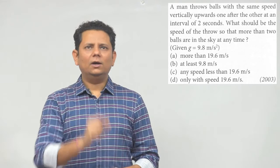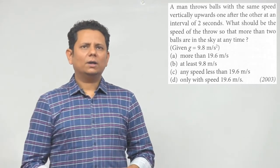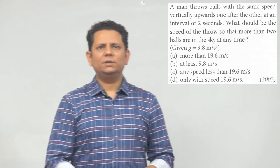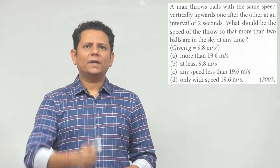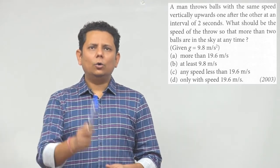Given g value is 9.8 meter per second square. Options are: (a) more than 19.6 meter per second, (b) at least 9.8 meter per second, (c) any speed less than 19.6 meter per second, (d) only with speed 19.6 meter per second.